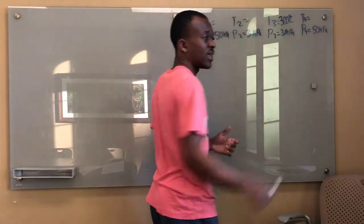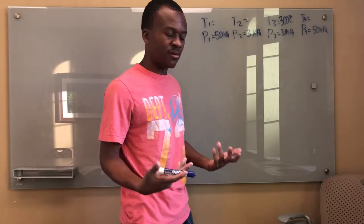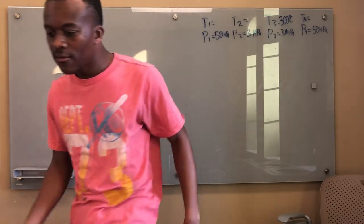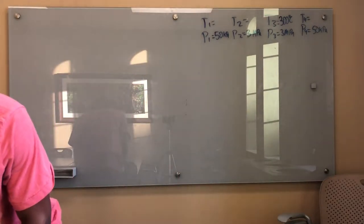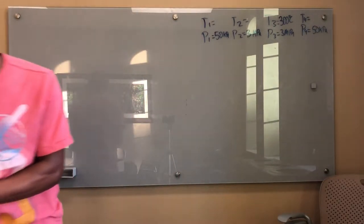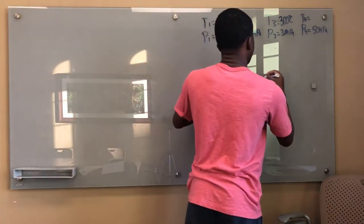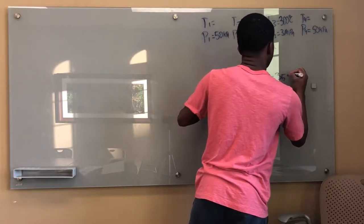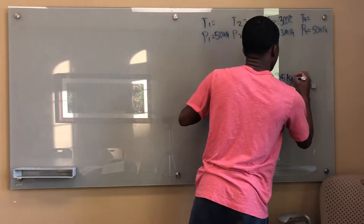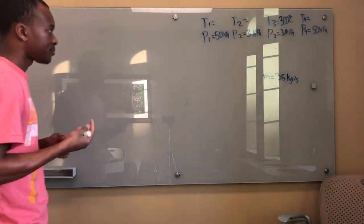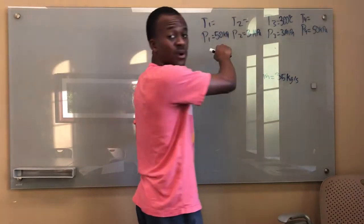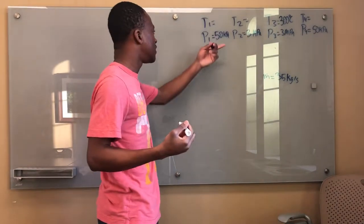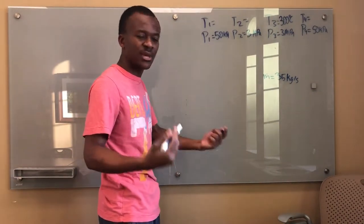I'm sort of filling up my graph. You only need two independent properties to define a whole system, so I can get every point I need. The mass flow rate is 35 kilograms per second. I can already find every point because I know that point one is a saturated liquid.